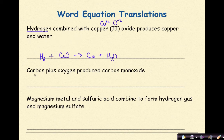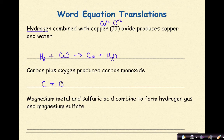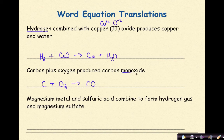Carbon plus oxygen produces carbon monoxide. Carbon by itself is just C — it's not a diatomic. Plus is a plus sign. Oxygen is a diatomic, so it's O2. Produced is an arrow. Carbon monoxide is a binary molecular compound, so it's C and O — monoxide means one oxygen, so CO. That is just the translation from the words to the formulas.